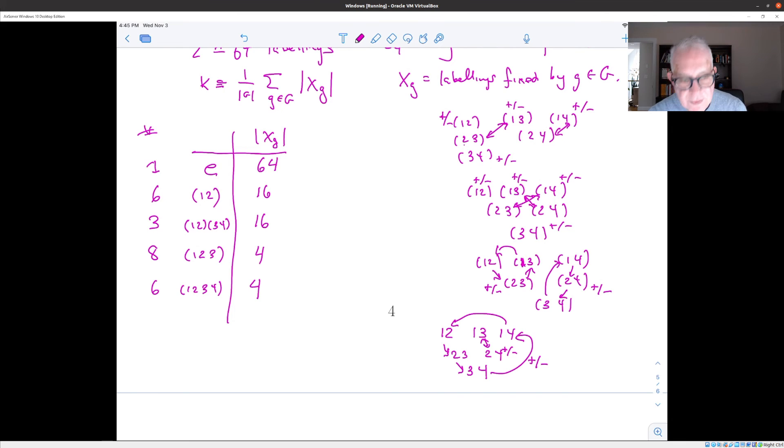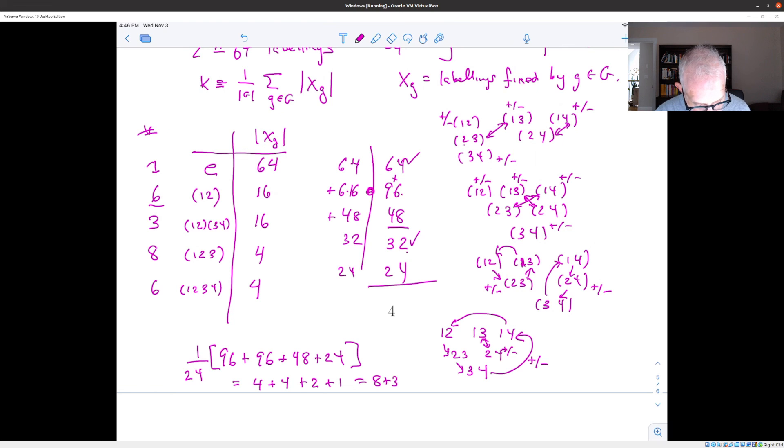Now, remember that the sum in Burnside is the sum over all the elements in G. What that means is that when we sum this up, we're going to get 1 times 64. We're going to get 6 times 16, which is 96. So let's keep this. It's 64 plus 96 plus 48, 3 times 16, plus 32, plus 24. And if we add all this up, we get 64 plus 32 is 96. So we get 96 from these two. We get 96 from that one. So that's two 96s. And then we have a 48 and a 24. And this is all divided by the order of the group, which is 24. So 96 is 4 times 24. So this works out to be 4 plus 4 plus 2 plus 1, which is 8 plus 3, which is 11.